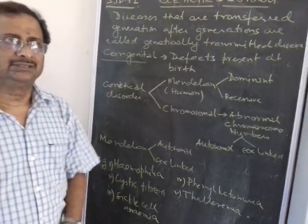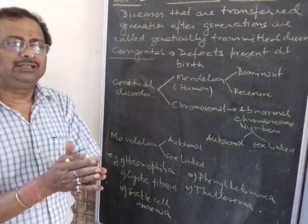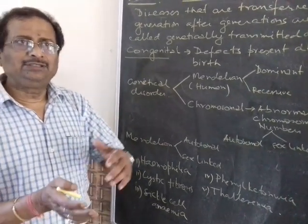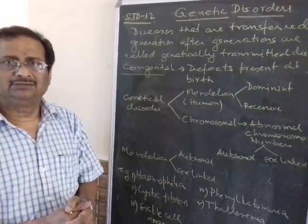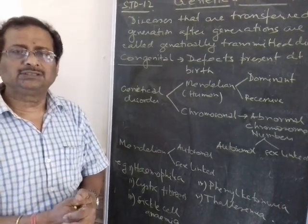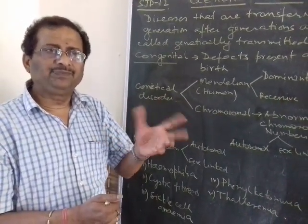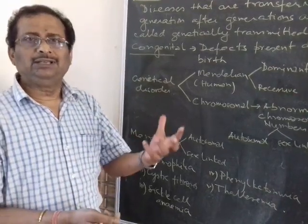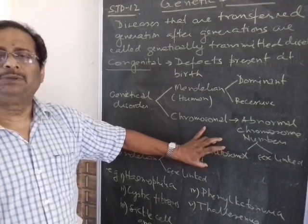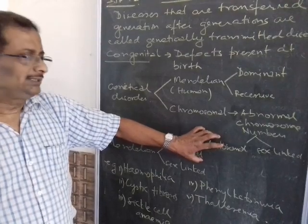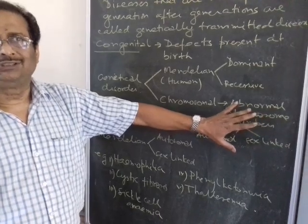When non-disjunction of chromosomes takes place during meiosis, the chromosomes may not divide properly — a fraction may go into the other part — leading to differences in chromosome numbers. Examples include Down syndrome, Klinefelter syndrome, and Turner syndrome. Chromosomal disorders can be autosomal, like Down syndrome, or sex-linked, like Turner syndrome or Klinefelter syndrome.